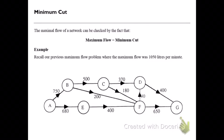This topic is about using minimum cuts to work out the maximum flow of a network. The maximal flow of a network can be checked by the fact that maximum flow equals minimum cut. Now this is not something we're going to prove, but it does work.